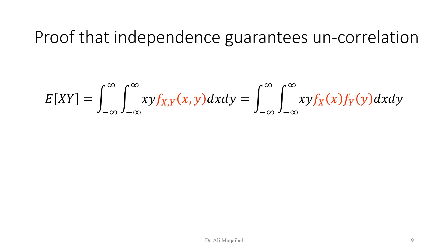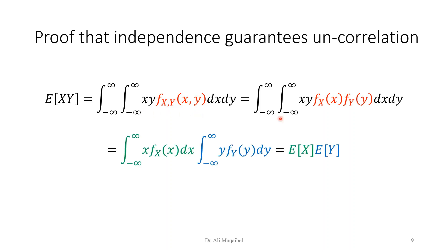In this slide we prove that if variables are independent, they are automatically uncorrelated. We start with the correlation definition: E[XY] = ∫∫ xy * f_{XY}(x,y) dx dy. If they are independent, we can separate the joint PDF as a product of the marginals. Once separated, we get two independent integrations — each is the individual expected value — so independence guarantees uncorrelation.